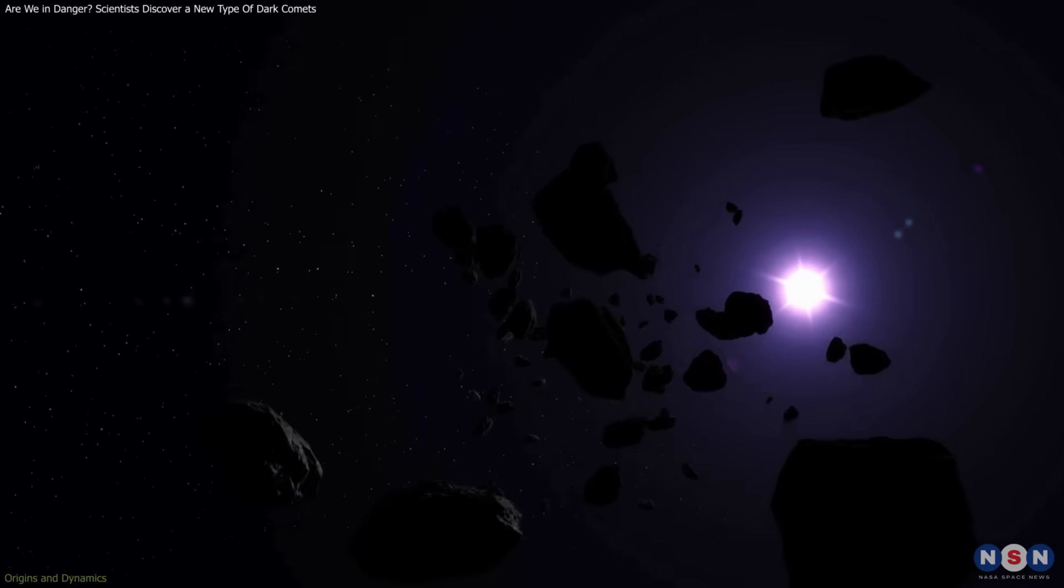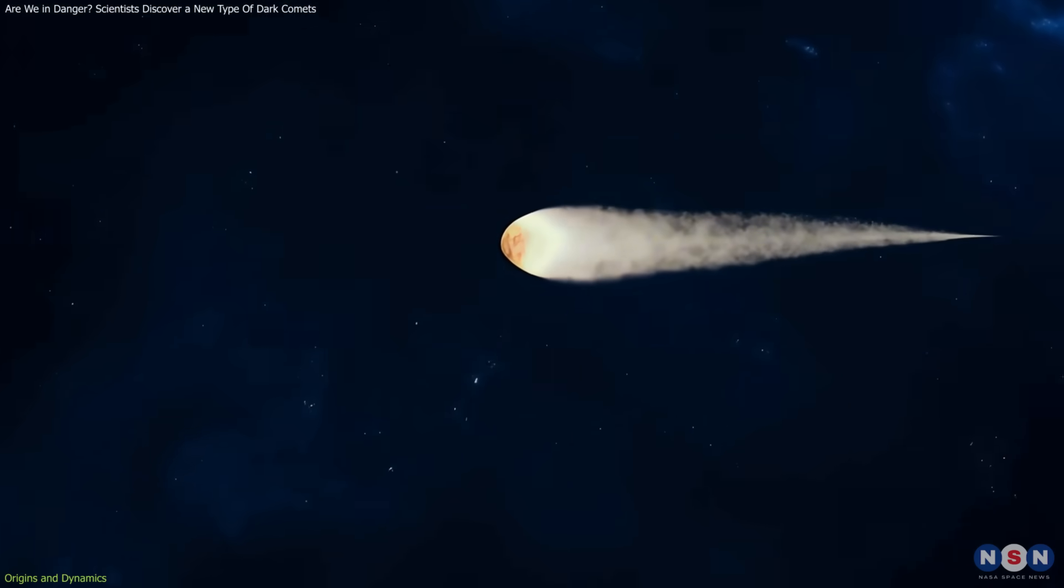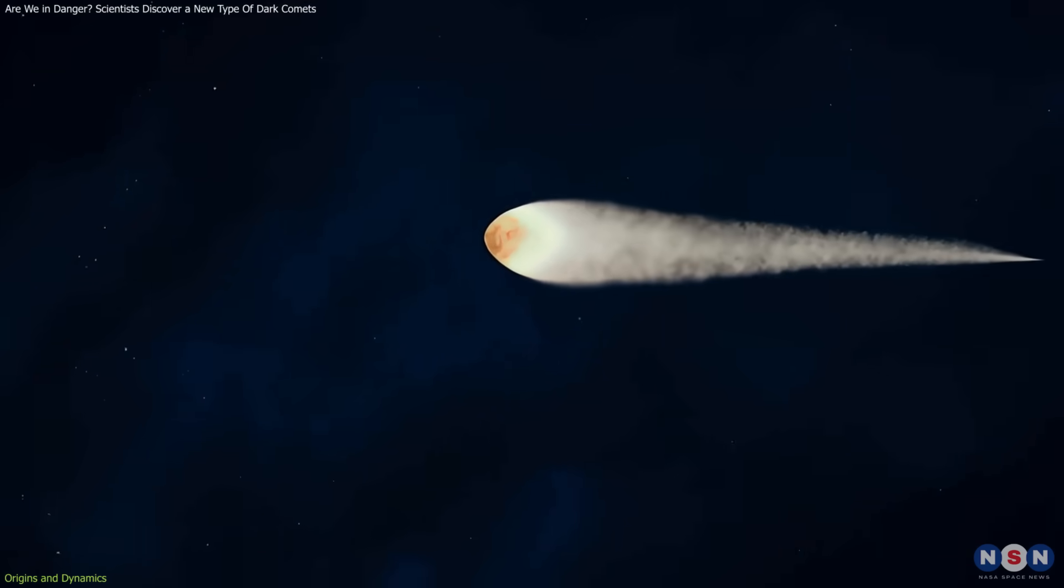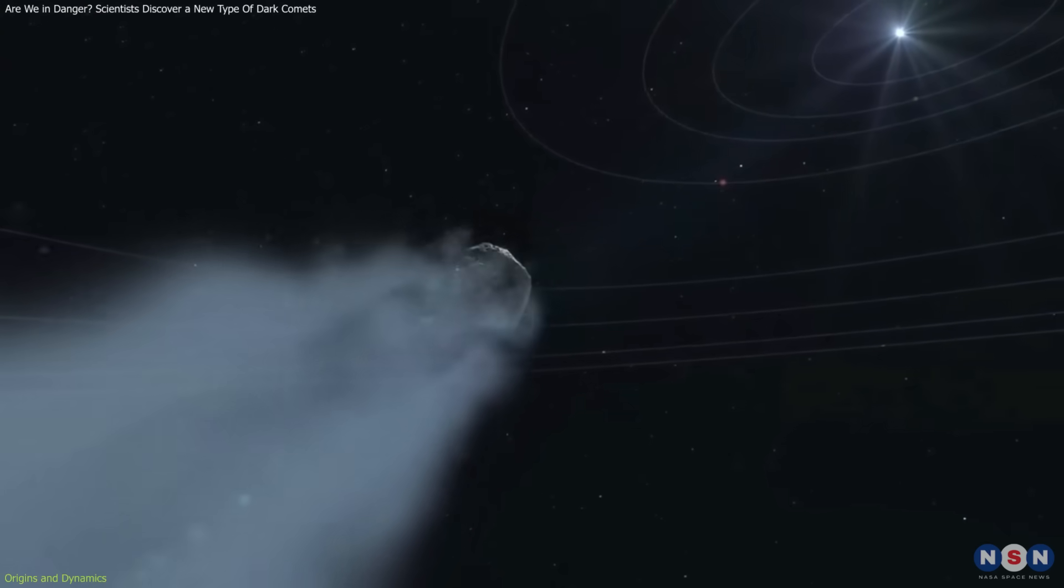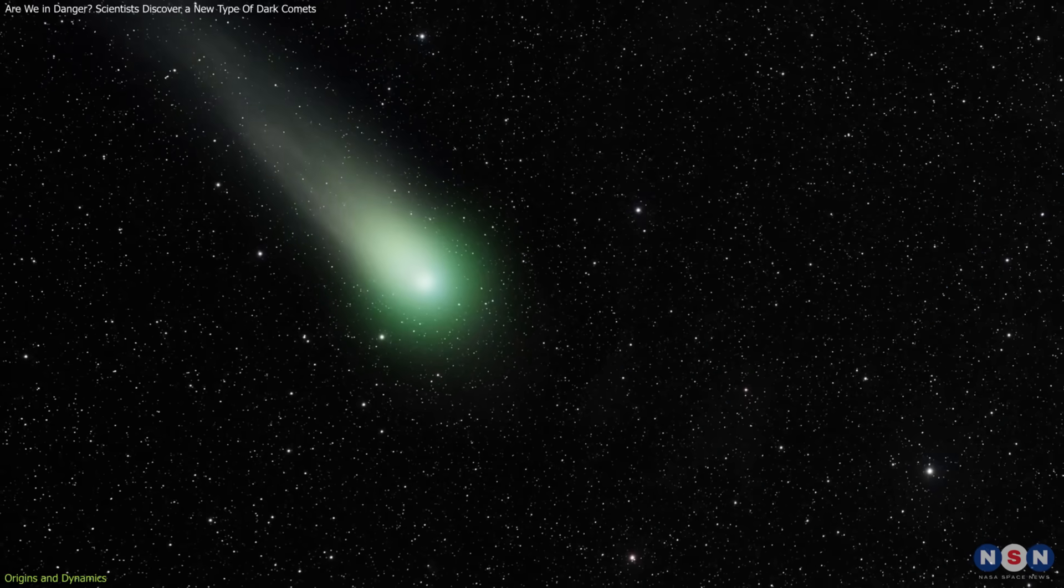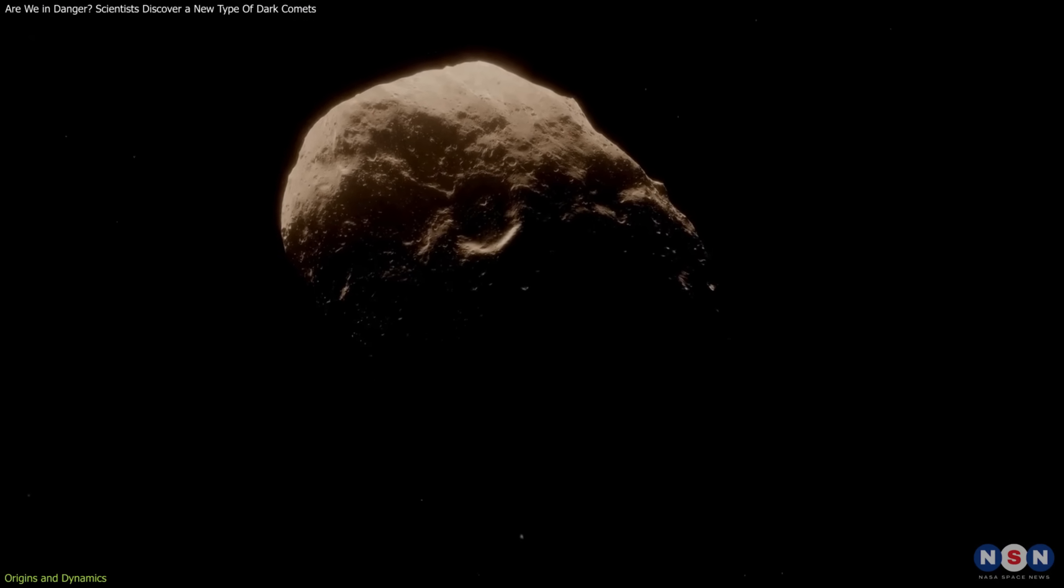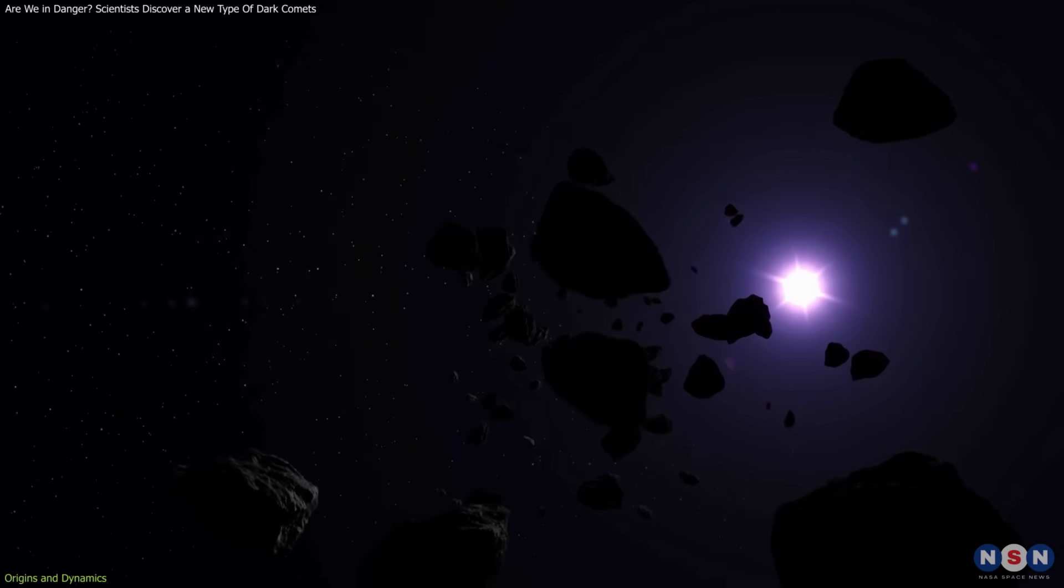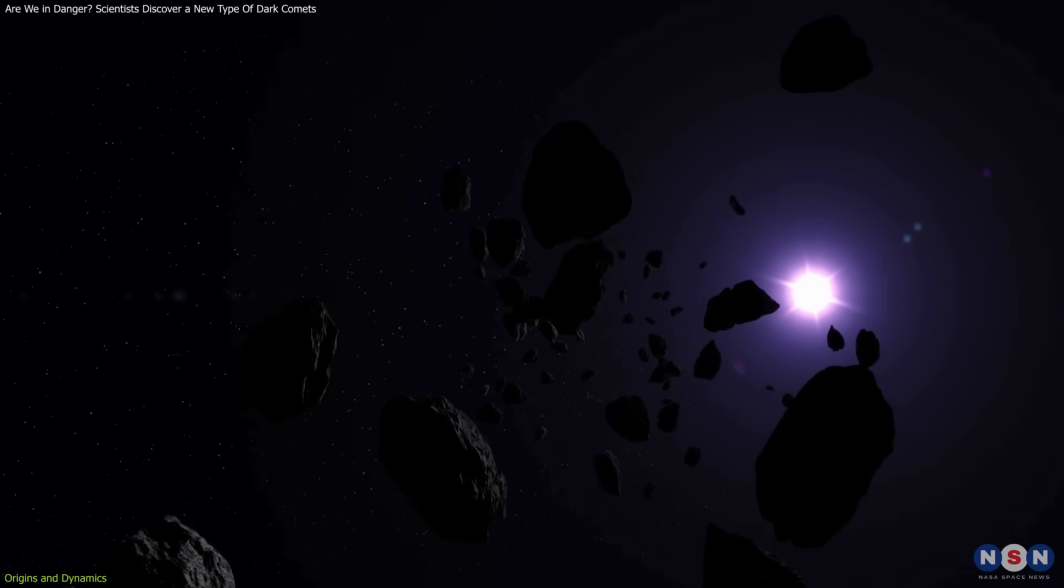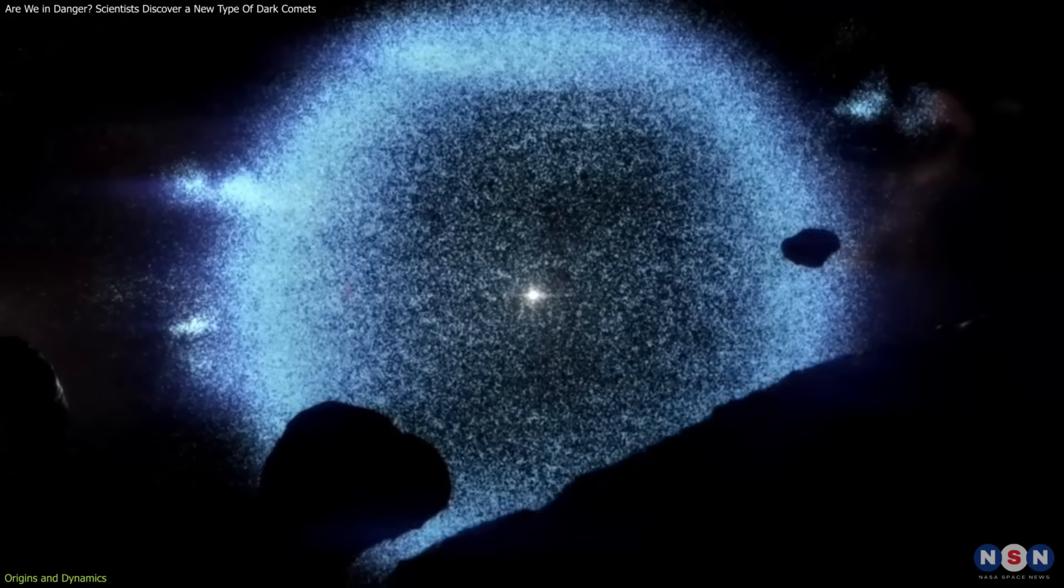The origins of dark comets are as mysterious as their behavior. One prevailing theory is that these objects are remnants of comets that have lost their volatile materials after repeated close passes to the sun. Over time, these exhausted comets may take on asteroid-like appearances while retaining some comet-like dynamics. Outer dark comets likely originated in the distant reaches of the solar system, possibly in the Kuiper Belt or Oort Cloud.